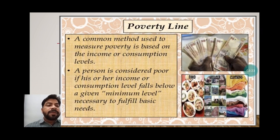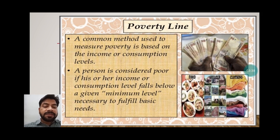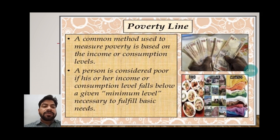Next is the poverty line. A common method used to measure poverty is based on income or consumption levels — this determines which community falls below the poverty line. The BPL and APL lists are produced by the government and also published in newspapers. A person is considered poor if his or her income or consumption level falls below a given minimum level necessary to fulfill basic needs — that is, when income is insufficient to purchase or afford available food and amenities.